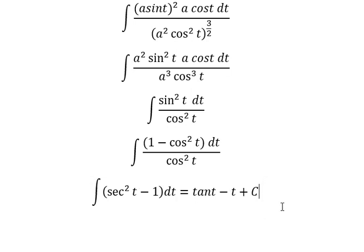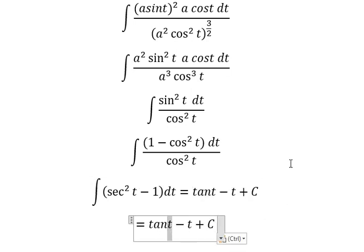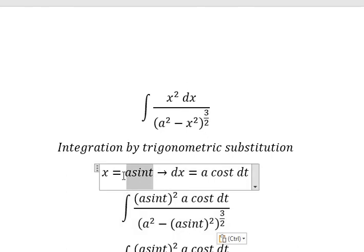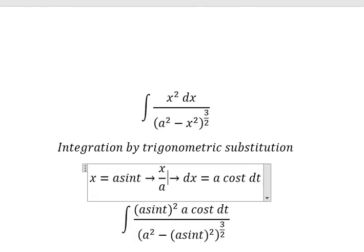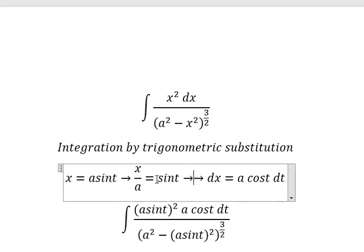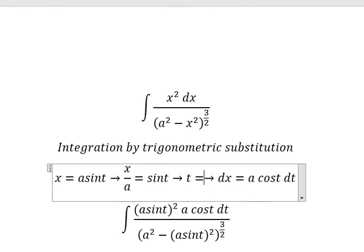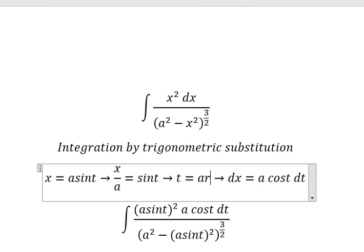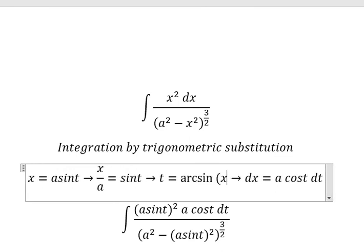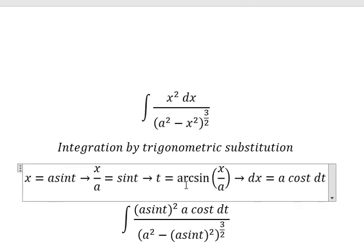We put in the constant C. Then we divide both sides by a. Next we need to find the value of t, which equals arcsin(x over a). Then I substitute this back to get the final answer. This is the end — thank you for watching, see you next time.